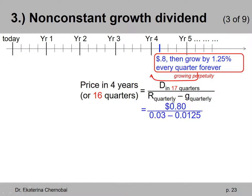You plug in the numbers, 80 cents divided by .03, that's the quarterly discount rate, minus .0125, the quarterly growth in dividends. And the calculator gives us $45.71.